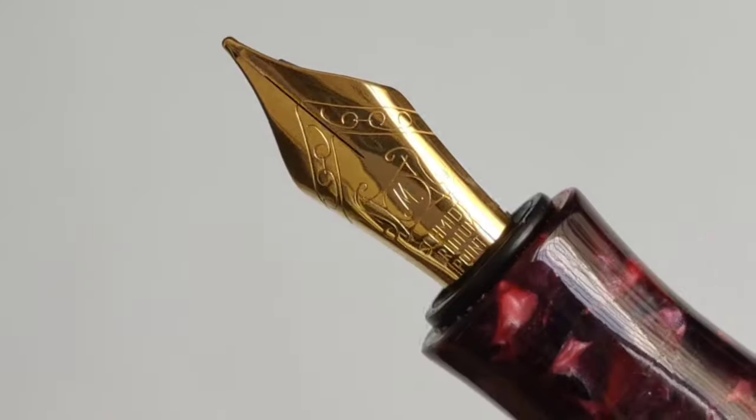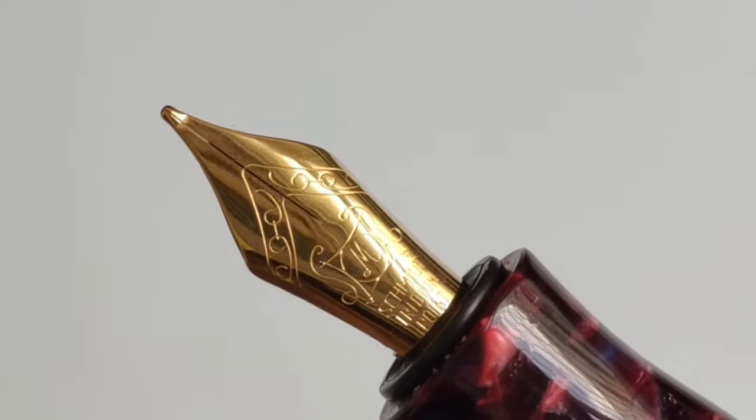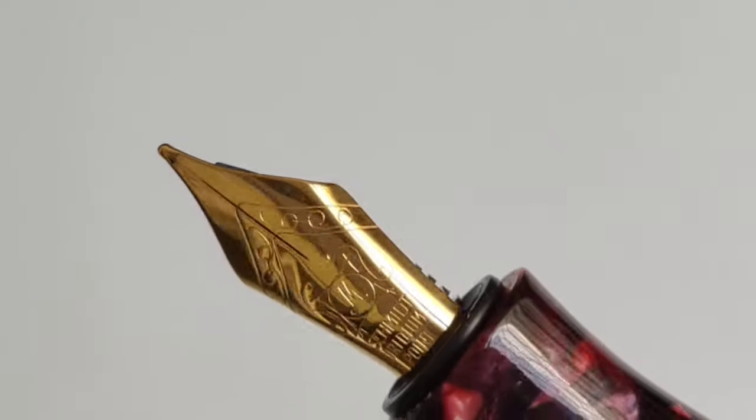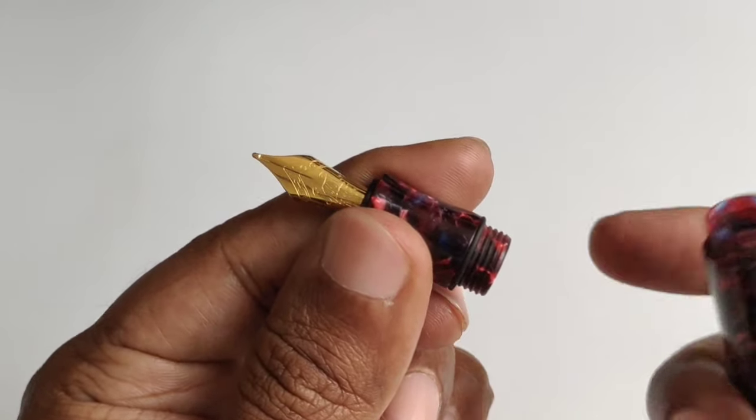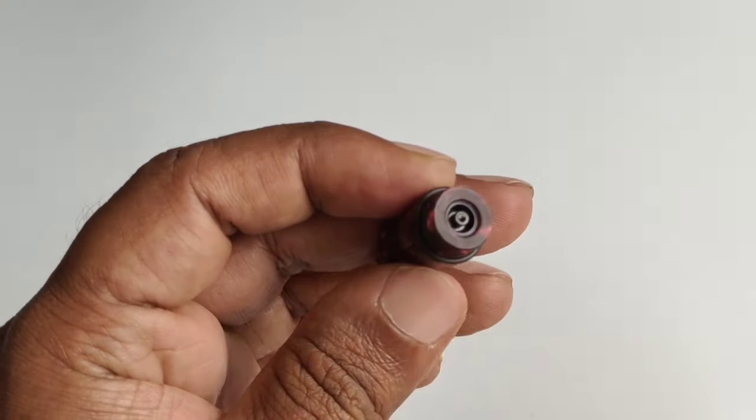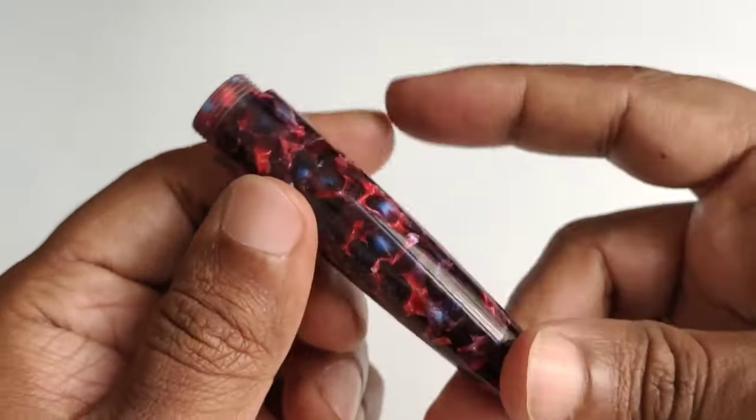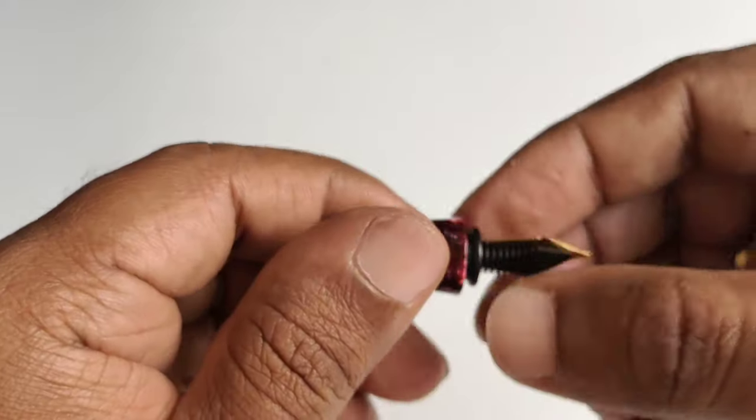Coming to its nib, it is fitted with the number five size gold plated iridium tip nib made by Schmidt, and I have chosen a medium point nib. This pen is suitable to use as eyedropper pen or a cartridge filling pen. This pen comes with a threading section and store fitting nib.